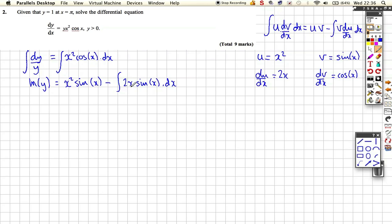So we're doing this in what we call the right direction, or we're doing it the correct way. If you'd chosen your u and v the wrong way around, you would have found out that this would have been a worse integral to have done than we started with, but we've got one better.